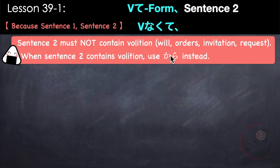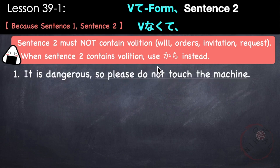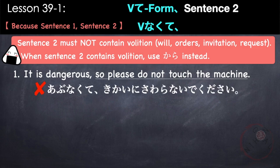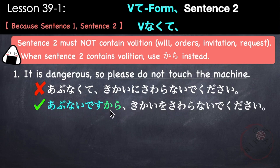As stated, sentence two must not contain volition in this pattern. If it does, you must use から. Example: It's dangerous, so please don't touch the machine. Since the second sentence is an order/request, we cannot use abunakute. Instead: 危ないですから、機械に触らないでください。 Abunai desu kara, kikai wo sawaranai de kudasai.